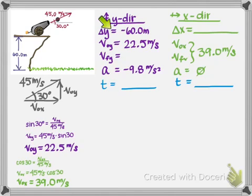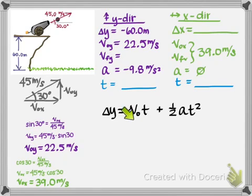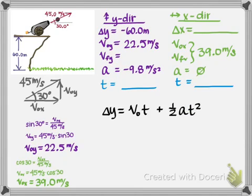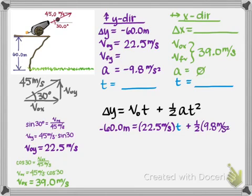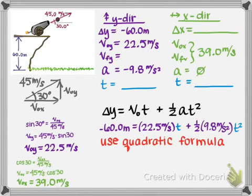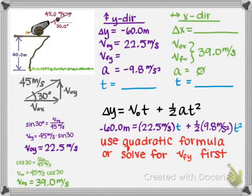Looking at the y direction, I have delta y, v₀y, and acceleration, and I want to find time. The formula that works here is delta y equals v₀ times t plus one-half a times t squared — and we have delta y, v₀, and a, and we want t. However, plugging in the numbers shows we'd have to use the quadratic formula to solve for t. It's possible, but it might be easier to first solve for v_final_y and then use a simpler formula to find time.